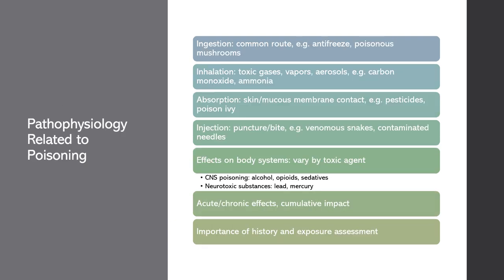Now let's look deeper into the pathophysiology of different types of poisonings, their effects on various body systems, and common toxic agents. Ingestion is the most common route of poisoning, typically involving consumption of toxic substances like household cleaning agents, medications, or contaminated food. For example, ingesting ethylene glycol, found in antifreeze, can lead to kidney failure, while consuming poisonous mushrooms such as Amanita phalloides can cause severe liver and kidney damage.